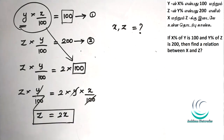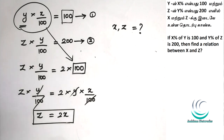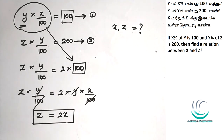So z equals 2x. That is the answer to this question. It's very simple — just using the basics, it's easy to face. Okay, next question.